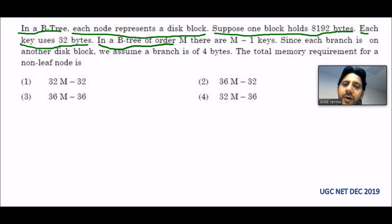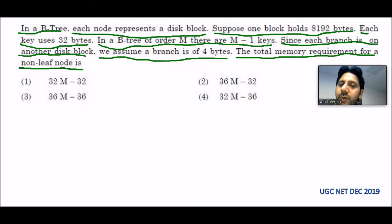Each key uses 32 bytes. In a B-tree of order M, there are M-1 keys. Since each branch is on another disk block, we assume a branch is 4 bytes. The total memory required for a non-leaf node is asked, and these are the options given.